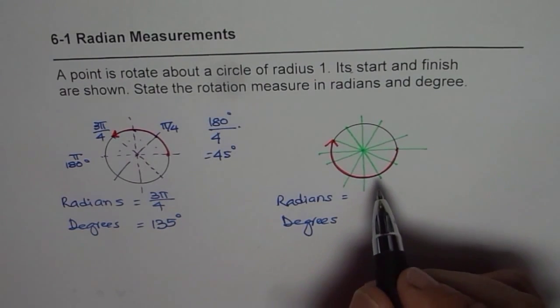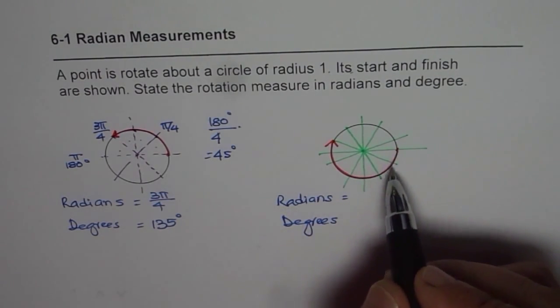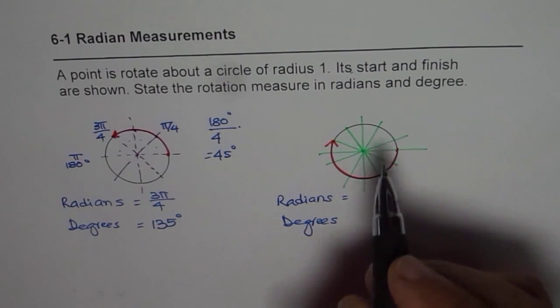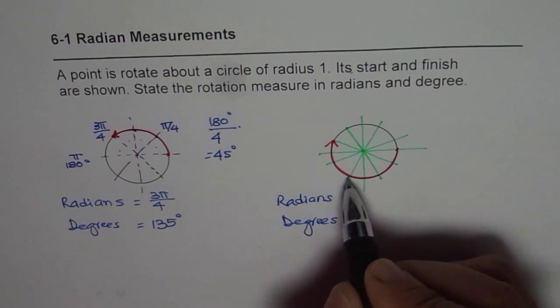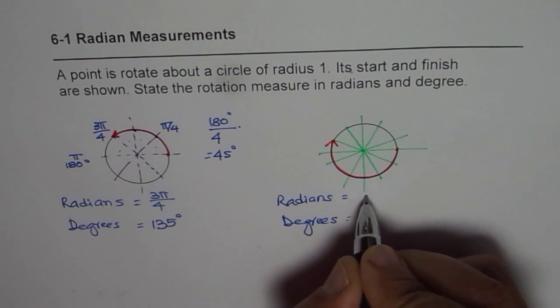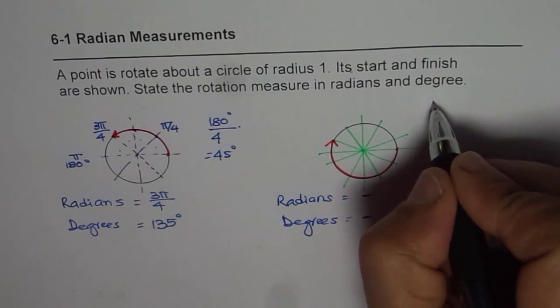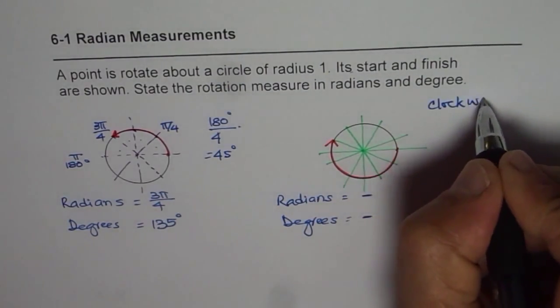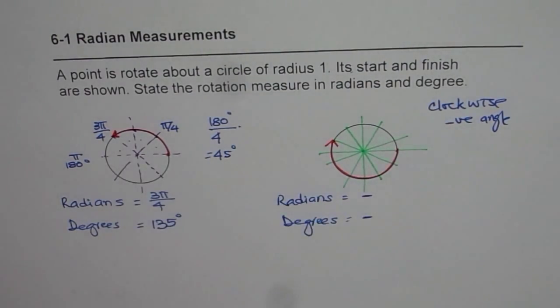Now let's look into the second circle here and let's see the rotation measure of angles. Now, since we are going clockwise, our angles should be negative. So to be on safe side, let me put negative first. Since we are going clockwise, remember this, clockwise means negative angle. Counterclockwise is positive.